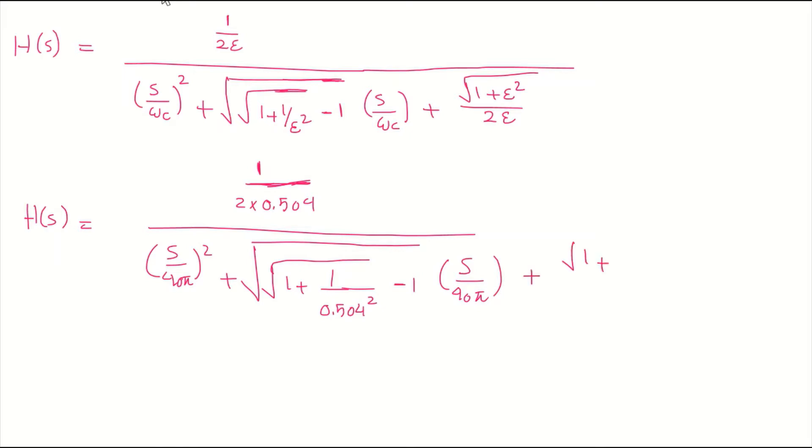Plus square root of 1 plus 0.504 squared divided by 2 times 0.504. So that means H of s equals...